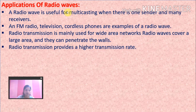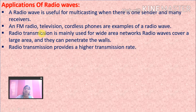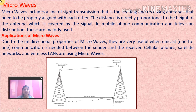Radio waves are used for multicasting — when there is one sender and many receivers, just like FM radio where one company sends signals and many receivers receive them. FM radio, television, and cordless phones are examples of radio waves. Radio transmission is mainly used for wide area networks. Radio waves cover a large area and can penetrate walls, providing a higher data transmission rate.